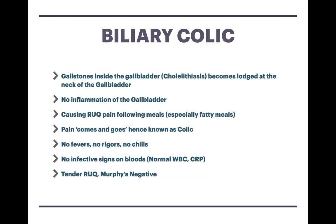Let's discuss the first pathology: biliary colic. A gallstone has formed within the gallbladder. Whenever we eat, the gallbladder contracts, and the stone sometimes lodges itself within the neck of the gallbladder. Whenever there's a blockage, you get distension, backflow, and no passage of bile out of the gallbladder — this is what causes the pain. Biliary colic occurs after meals when the gallbladder contracts and the gallstone becomes lodged. The pain presents predominantly in the right upper quadrant, can radiate up towards the shoulder tip, lasts about one to three hours, and then subsides.